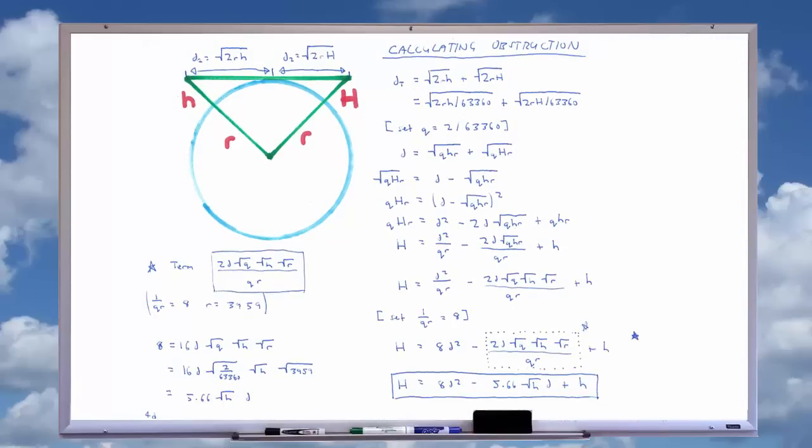Therefore, d, the distance to the lowest observable height of the object being observed, can be calculated with the following formula. d = sqrt(2rh) + sqrt(2rH), with h representing the height of the observer, and H representing the lowest observable height of the object in the distance. With this equation then, we will know the variables d, r, and small h, and we are trying to find value of large H.